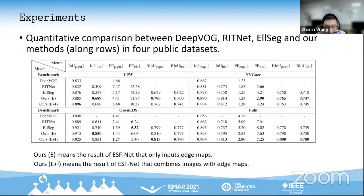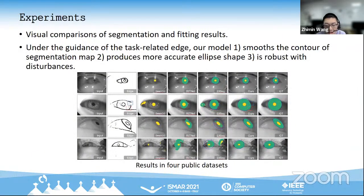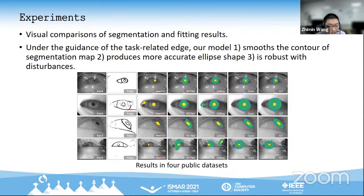Our edge-only variant achieves generally similar average results, demonstrating the advantage of using our extracted high-quality edges in segmentation and ellipse fitting even without using the original image as input. Under the guidance of the task-related edges, our model focuses more on boundary regions such as the contours of the segmentation map and segments more accurate ellipse shapes. Our method is rarely affected by disturbance such as reflections on glasses.